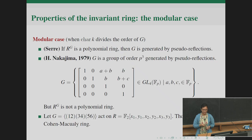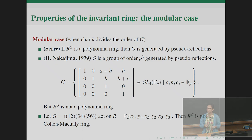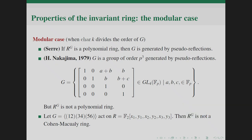In the modular case, when the characteristic divides the order of the group, both theorems fall out. Serre proved that R^G being a polynomial ring implies G is generated by pseudo-reflections, but the converse is not true. A counterexample is given by Nakajima in 1979: the characteristic is p, the order of the group is p³, G is generated by pseudo-reflections, but R^G is not a polynomial ring.